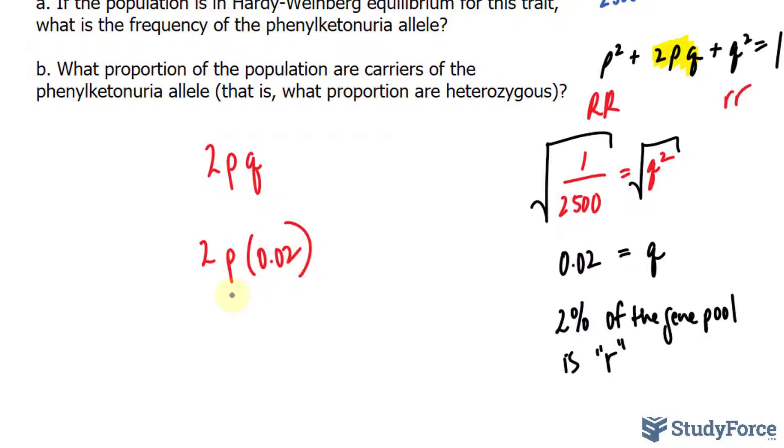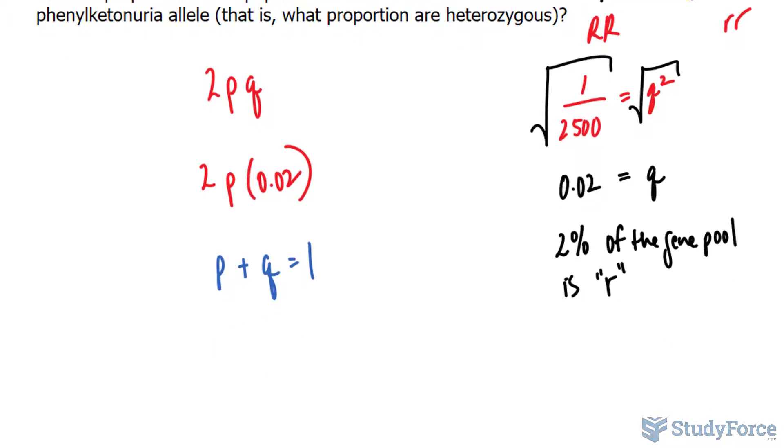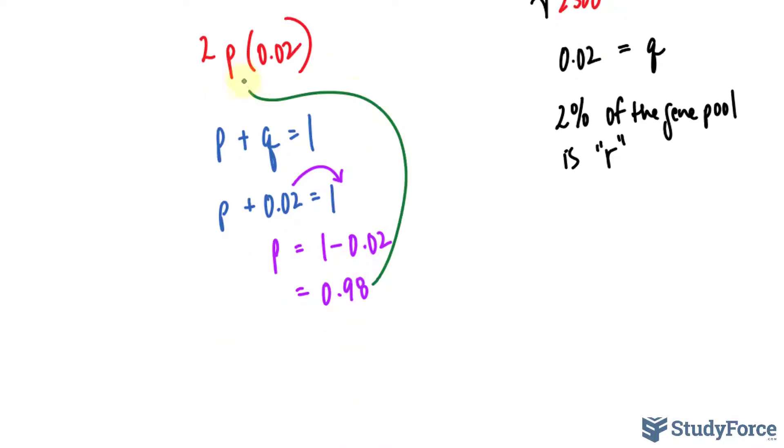So I'll write down 2p and q is 0.02. To find out p, you will use the formula p plus q is equal to 1. This formula tells you the allele frequency in the entire gene pool. By substituting 0.02 in for q and solving for p, we'll have the allele frequency of the dominant allele, the healthy one. 1 minus 0.02 is 0.98. We'll take 0.98 and substitute it into the formula right there.